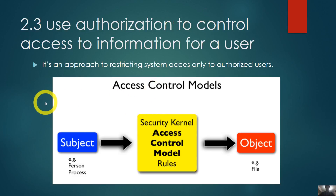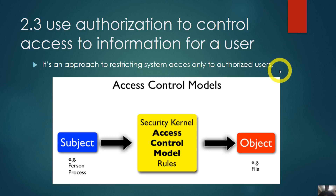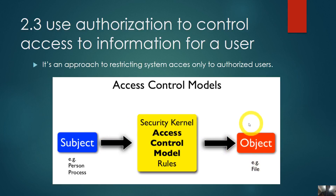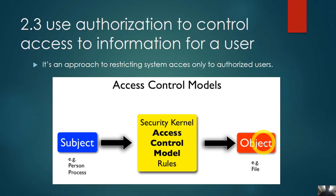The last subtopic we will talk about is authorization to control access and information for the user. Authorization control is an approach of restricting system access only to authorized users. So imagine a user who is already authenticated and in a session — that does not mean they can access all files on the server. That person will only access specific files or specific information. That's the reason access control models exist.